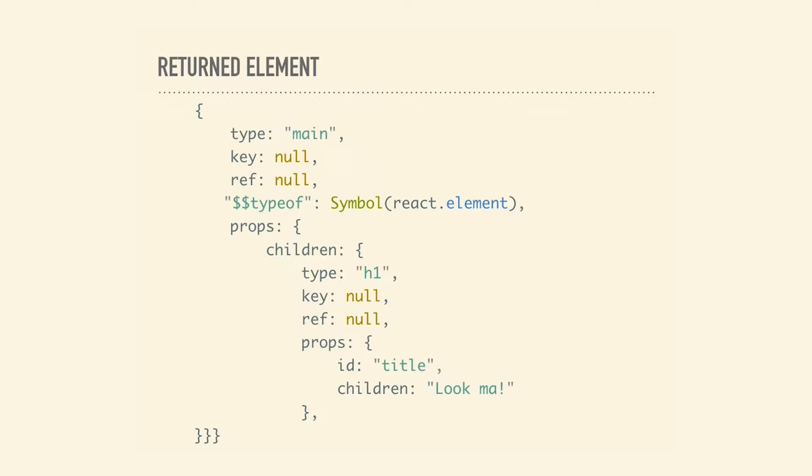To review: we have our component, React internally creates a component instance, and that generates this object. This object and its children — going all the way down — is what's known as the virtual DOM. This is the core guiding principle behind why we want something like React. It's really expensive to write to the DOM, but it's really cheap to generate these objects. React can do them super fast. It's super cheap to build these up and tear them down.